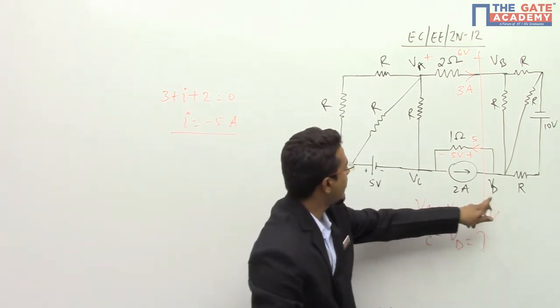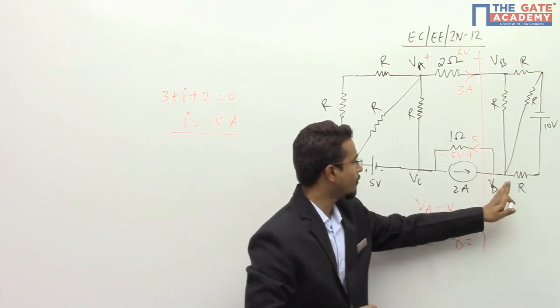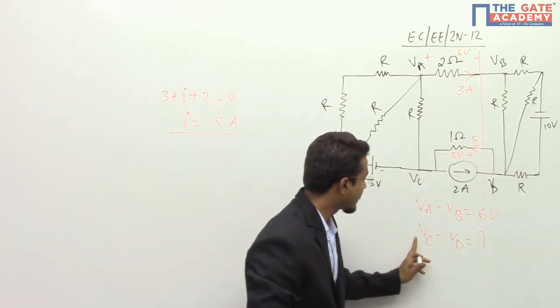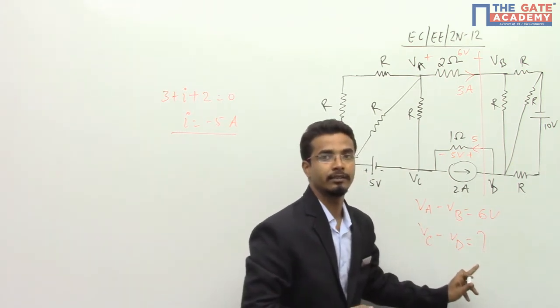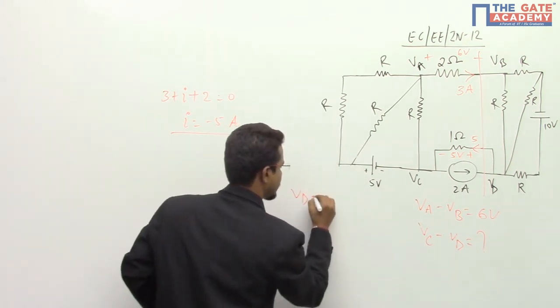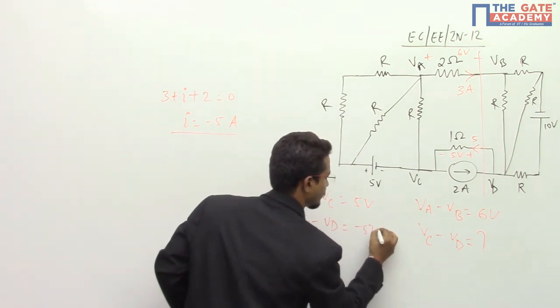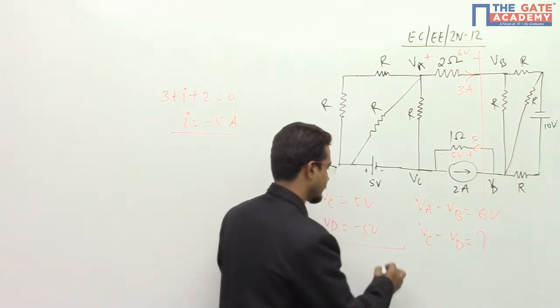That is VD minus VC is 5 volt. Whenever you will move from VD to VC, the decrement of 5 volt will occur. But they are asking the value of VC minus VD. So you can get VD minus VC is equals to 5 volt. So VC minus VD is equals to minus 5 volt. And which is in option A.